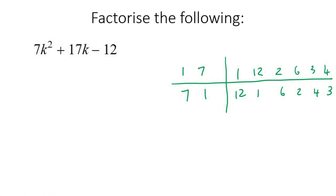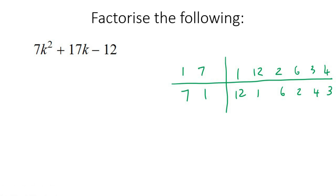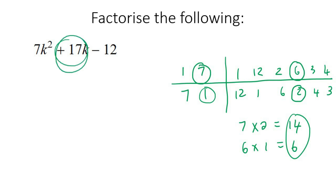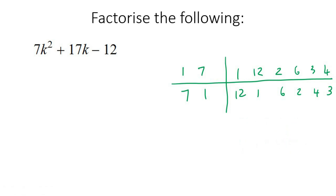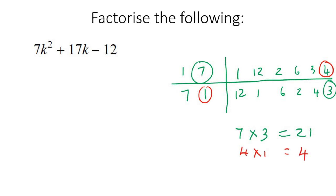We choose numbers trying to get close to 17. Something like 7 times 12 would be 84 — way too much. Try 7 times 2: that's 14. Then opposites: 6 times 1 is 6. But 14 and 6 can never give 17, so start again. Try 7 times 3: that's 21. Opposites: 4 times 1, which is 4. And 21 take away 4 gives 17. We're in business.